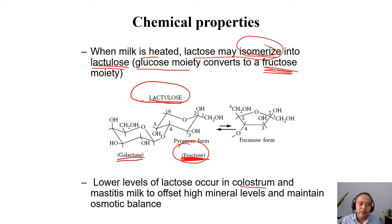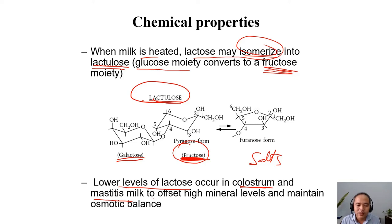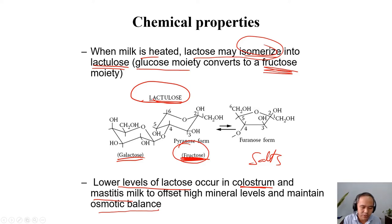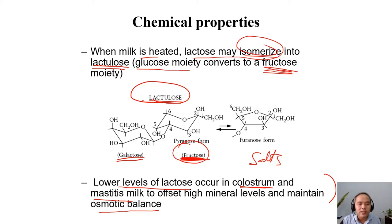Colostrum and mastitis milk have low levels of lactose. Colostrum has low lactose because it has more salts. Mastitis milk also has low lactose content, because lactose is synthesized in secretory cells, and when mastitis occurs it is influenced, lowering the lactose content. This is to balance the osmotic pressure of milk according to the homeostasis mechanism. Both colostrum and mastitis milk have lower content of lactose.